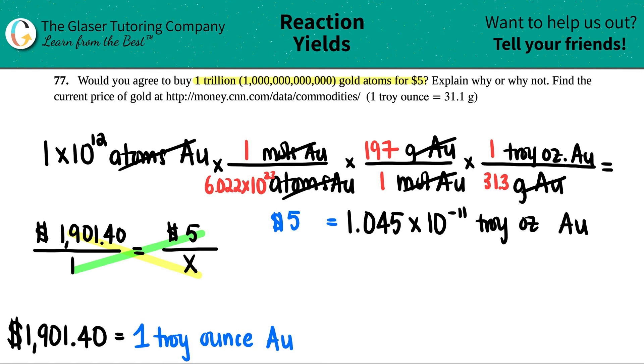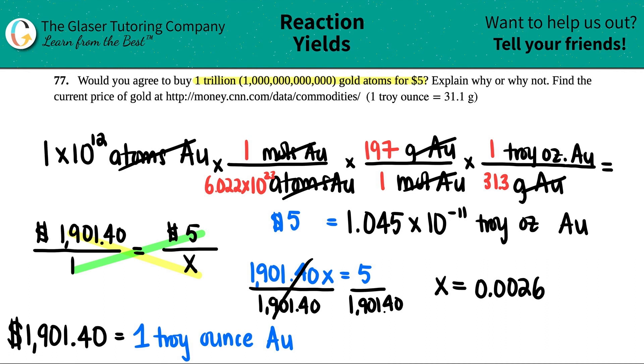So it looks like 1901.40 x equals 5. Get x by itself, you want to divide by this really big number. What do we get? x equals 5 divided by 1901.40, and I get 0.0026. That's how many troy ounces should be equivalent to five dollars.